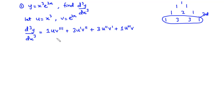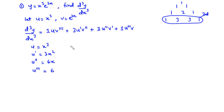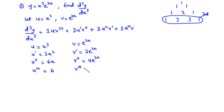Now let's find the derivatives of u and v. Since u equals x cubed: u' equals 3x squared, u'' equals 6x, and u''' equals 6. For v equals e to the power 2x: v' equals 2e^(2x), v'' equals 4e^(2x), and v''' equals 8e^(2x).